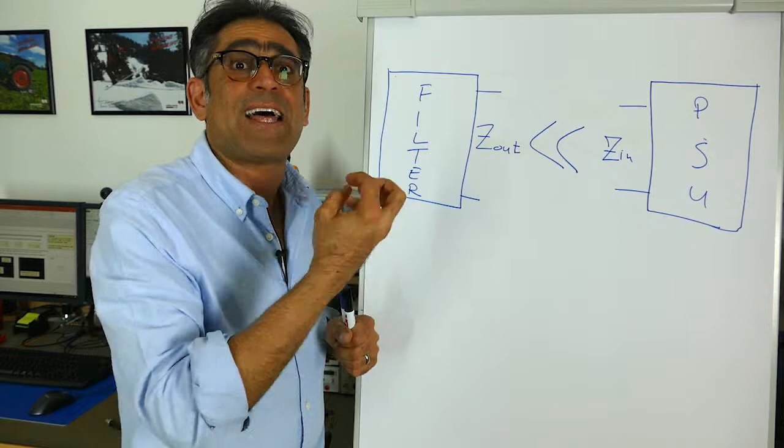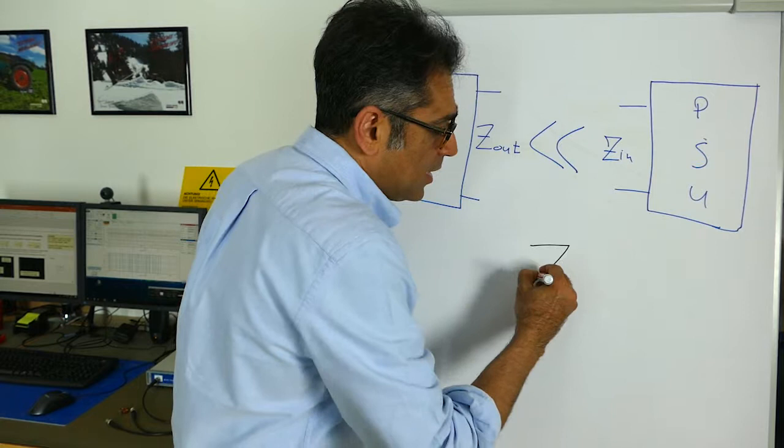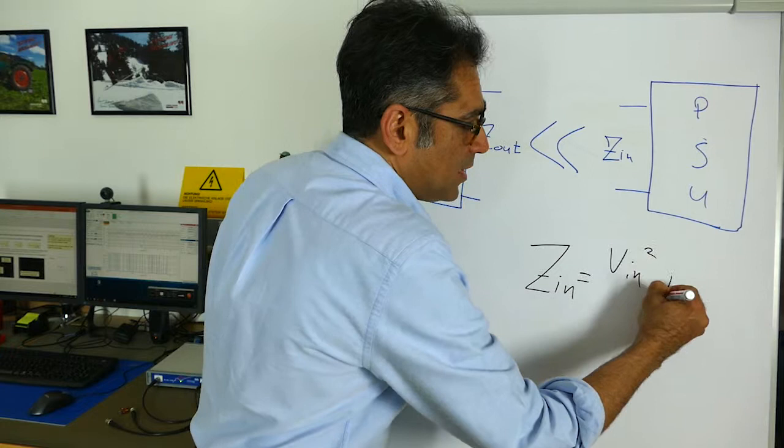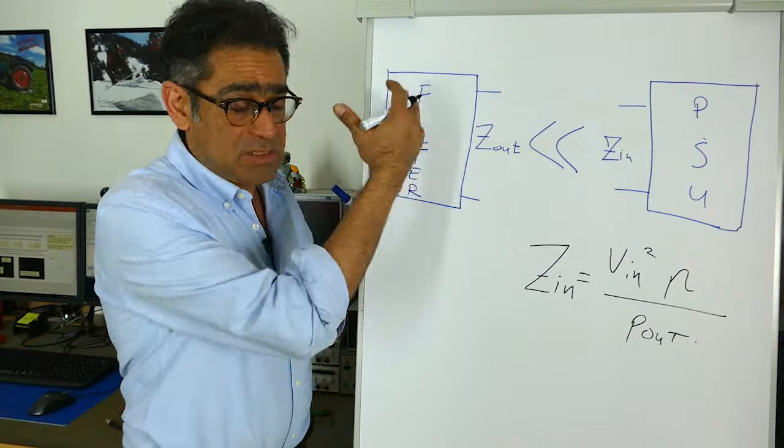The equation for the input impedance of the power supply is V_in squared times efficiency divided by output power as shown in Steve Sandler's book, and the Z_out of the filter which is a simple LC filter, Z_out is equal to the square root of L over C.